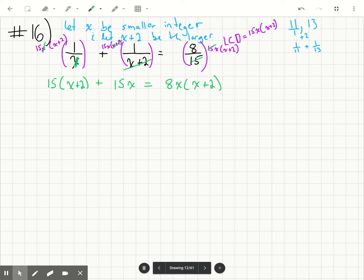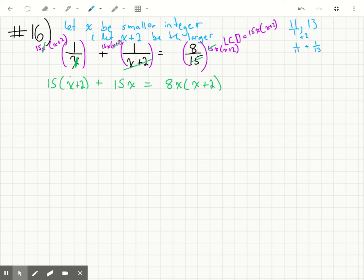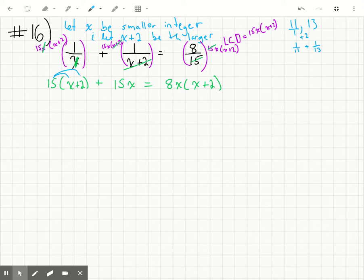Let's go ahead and expand that and see what we can do to simplify. So if we distribute here, we're going to distribute. Same thing here. This is already finished. So 15x plus 30 plus 15x is equal to 8x squared plus 16x.